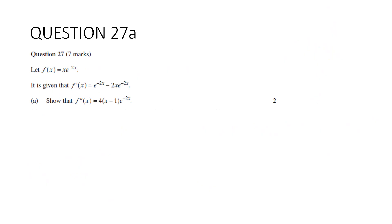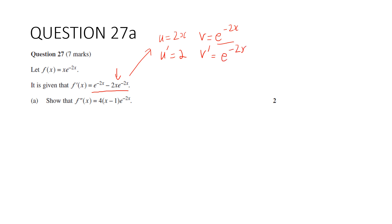Question 27. Let f(x) = x·e^(−2x). It is given that f'(x) = e^(−2x) − 2x·e^(−2x). Part A: show that the second derivative equals 4(x − 1)e^(−2x). We differentiate term by term. For the product term, let u = 2x and v = e^(−2x), giving u' = 2 and v' = −2e^(−2x) by the chain rule.